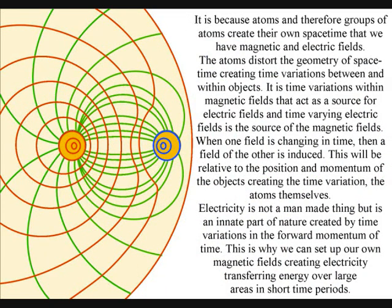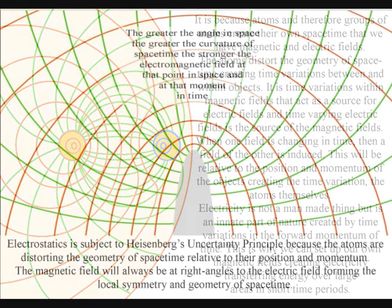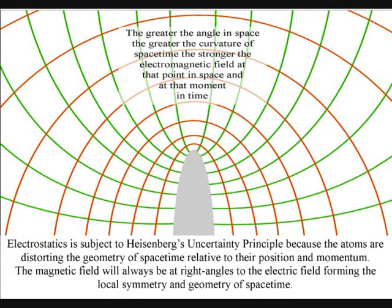It is time variations within magnetic fields that act as the source for electric fields. And time varying electric fields is a source of the magnetic fields. When one field is changing in time, then a field of the other is induced. This will be relative to the position and momentum of the objects creating the time variation, the atoms themselves.